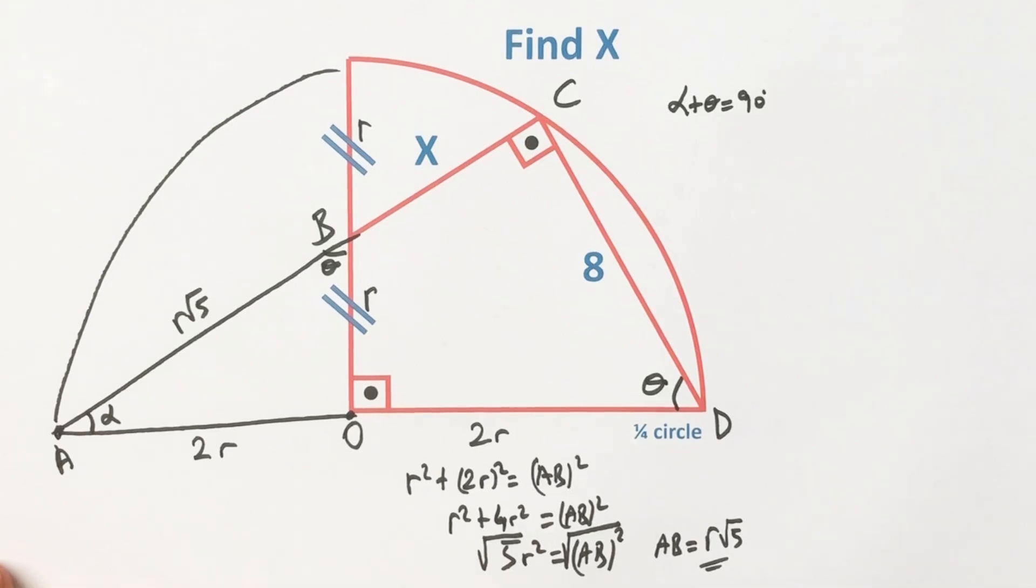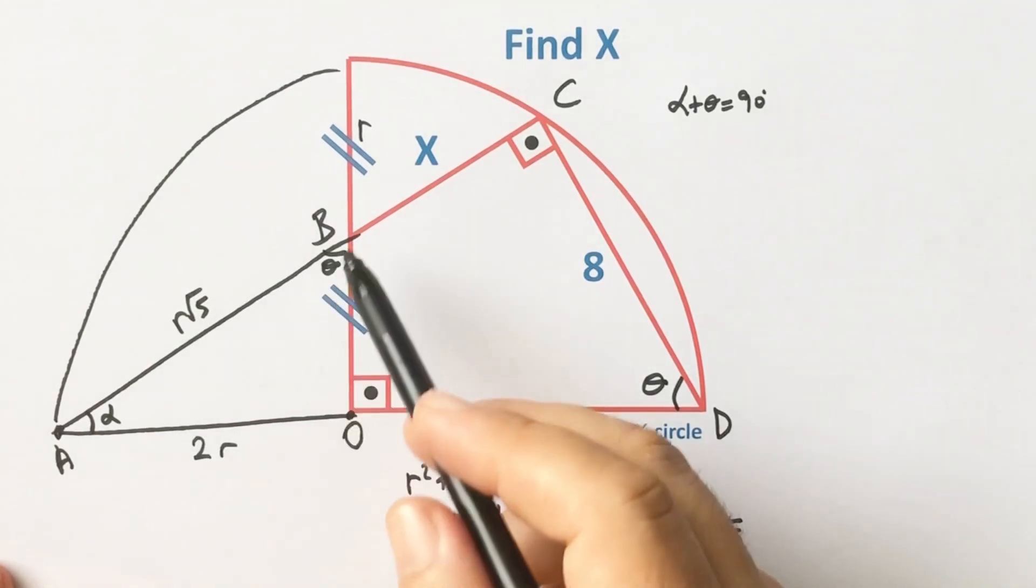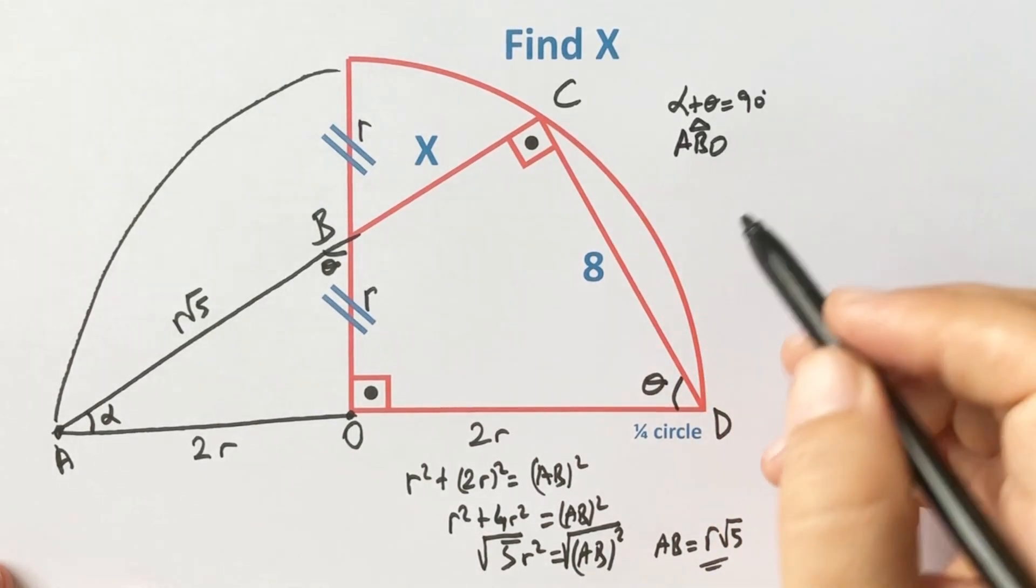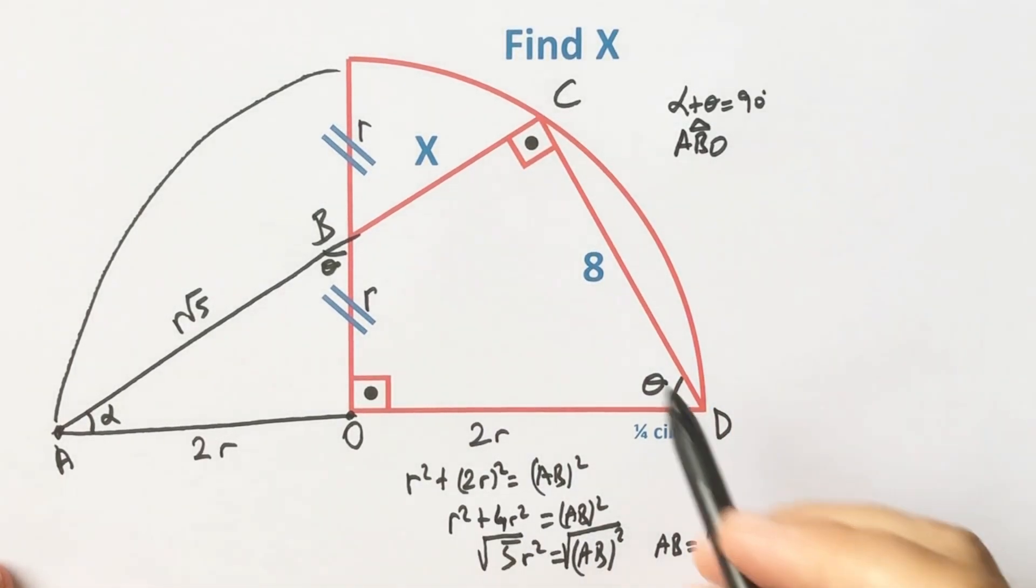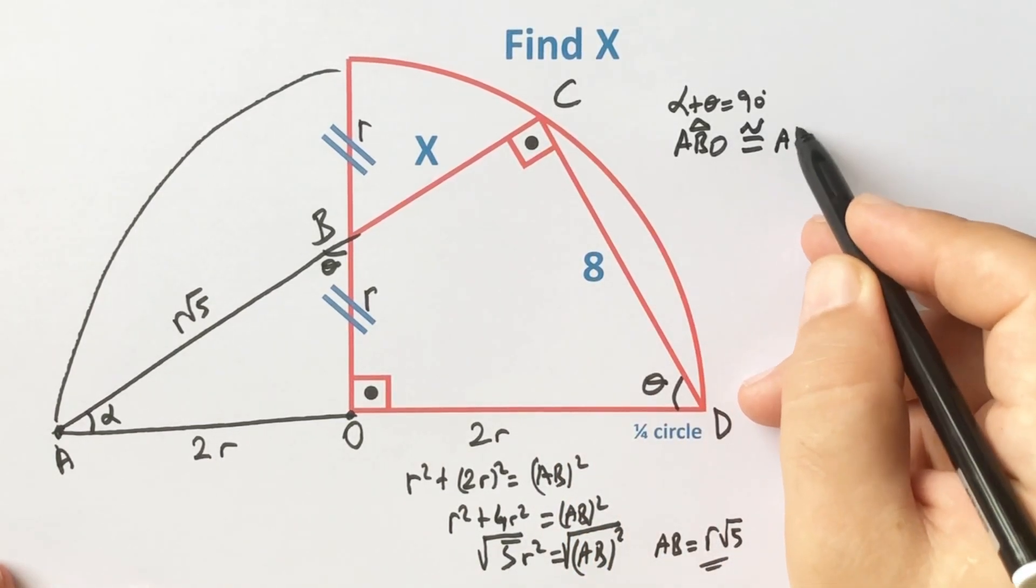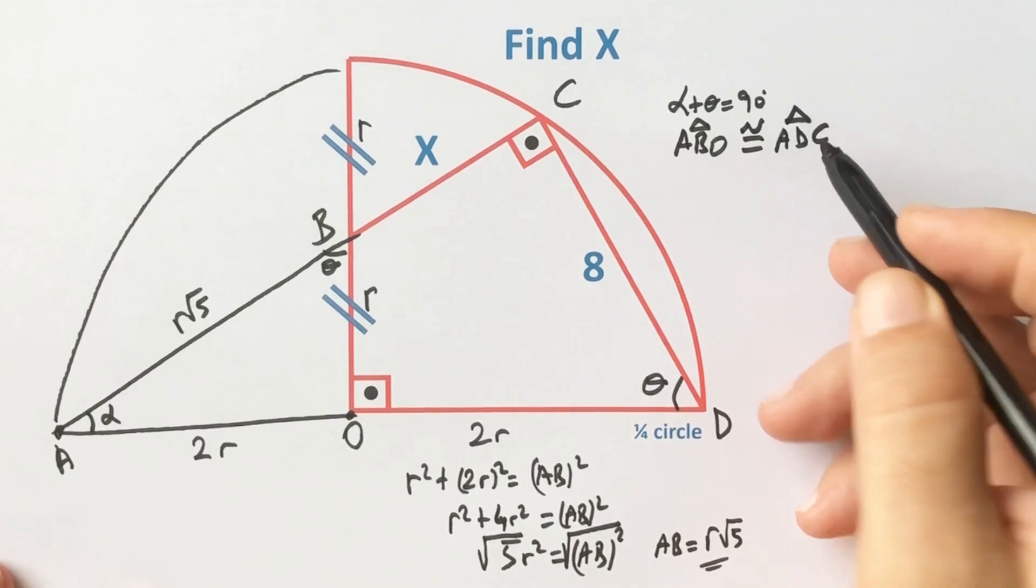Notice that triangle ABO and triangle ADC are similar.